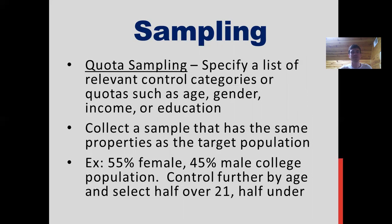Quota sampling is when you specify a list of relevant control categories or quotas — such as age, gender, or income — and you try to collect a sample with the same properties as the target population. For example, at a university where 55% of the population is female and 45% are male, you take a list of 1,000 people: 550 female and 450 male, then further divide those groups by an age quota — half over 21 and half under 21. That's one way to conduct quota sampling.